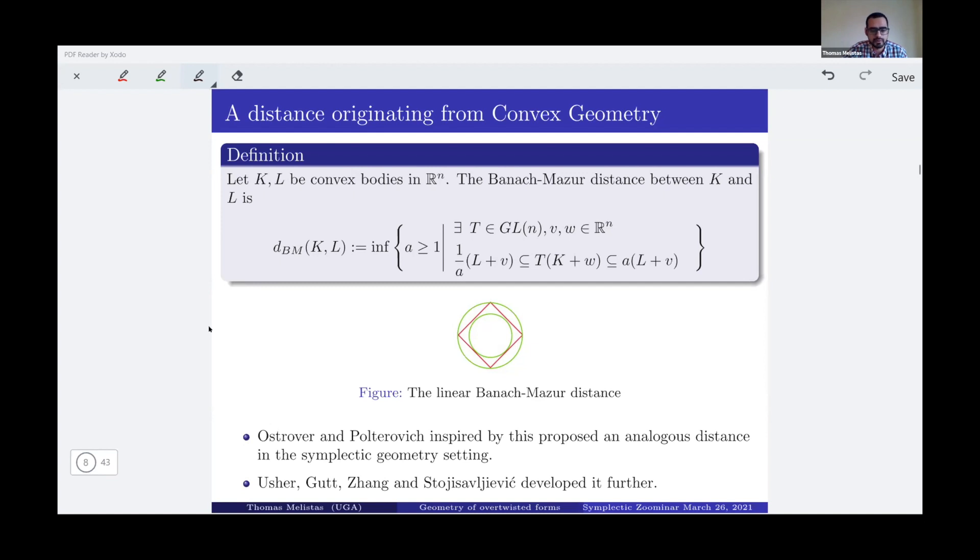So Ostrover and Polterovich brought that to symplectic geometry by proposing the symplectic Banach measure for Liouville domains, and then Passer, Gutt, Zhang, and Stojisavljevic developed this. We're not going to talk about this. Today we are going to talk about the contact case. Note that when defining such a distance, I care about the ambient space where I work on, and I care about the partial order which gives me this interleaving. So the partial order here is containment. So that's precisely what we want to do, find an ambient space and a partial order which will help us interleave forms and not bodies.